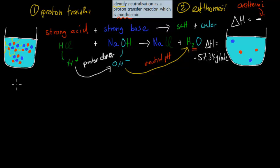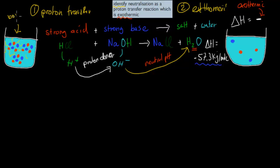For this reaction with a strong acid and a strong base, it's 57.3 kilojoules per mole being released. So if we have very concentrated strong acids and strong bases, there's going to be a lot of reaction happening and a lot of energy being released. It would come to a boil really quickly, and that might be dangerous. So when we have neutralization reactions, we don't tend to use very concentrated versions.